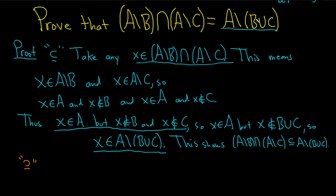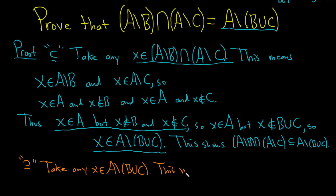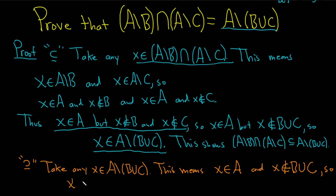Now we have to take an element in the right set and show it's in the left set. Take any x in A set minus B union C. This means that x is in A but it's not in the union. Since x is not in the union, that means it's not in B and it's not in C — because if it's in B or in C, it's in the union. So x is not in B and x is not in C.